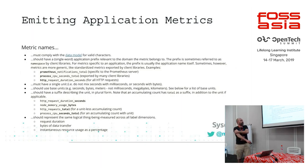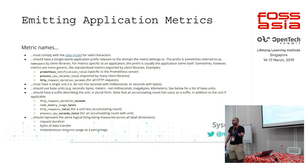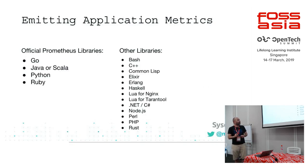The first thing to understand is how metric names work. Typically you have a prefix, then the actual metric itself, and at the end you have the unit being measured — things like seconds, bytes, or total. HTTP requests doesn't necessarily have a unit, so it would just be total. You can also combine them, for example total over number of seconds.